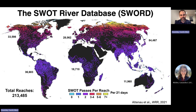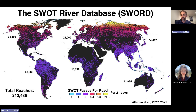Before looking at examples, let's think about which rivers we're looking at. This is the SWOT River Database, also called SWORD. We have about 213,000 reaches worldwide, and each reach contains on average about 50 nodes. You can go and download SWOT data for nearly any of these reaches or nodes globally.